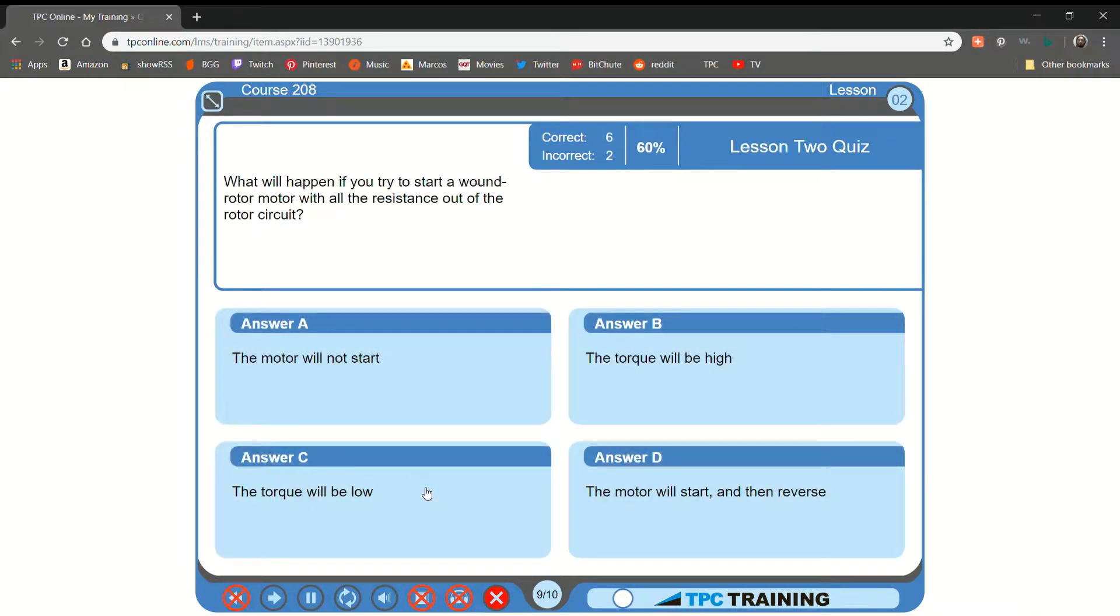What will happen if you try to start a wound rotor motor with all the resistance out of the rotor circuit? A. The motor will not start. B. The torque will be high. C. The torque will be low. D. The motor will start. That is not correct.